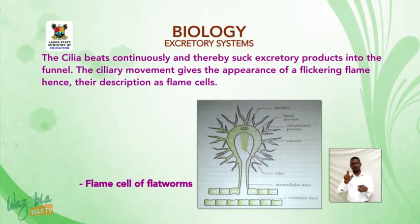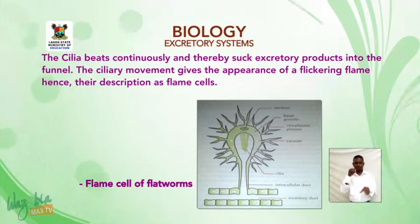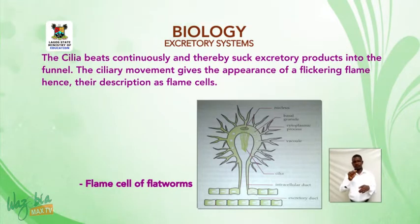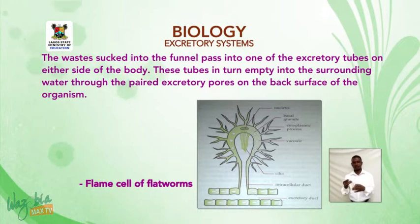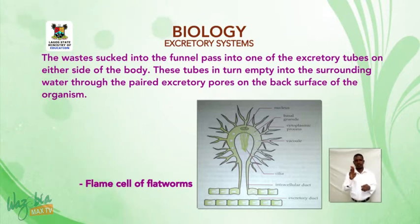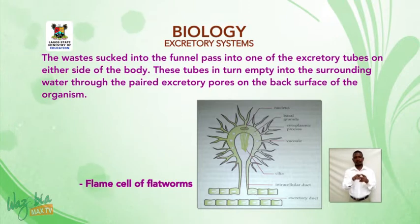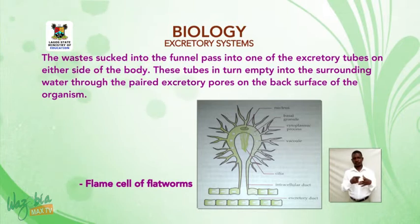Each flame cell is funnel-shaped with cilia around the mouth. The cilia beat continuously, sucking excretory products into the funnel — the ciliary movement gives the appearance of a flickering flame, hence the name 'flame cells.' The waste sucked into the funnel passes into excretory tubes on either side of the body, which empty into the surrounding water through paired excretory pores on the back surface of the organism.